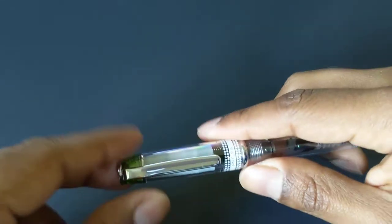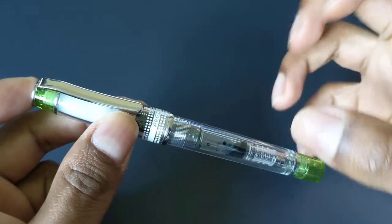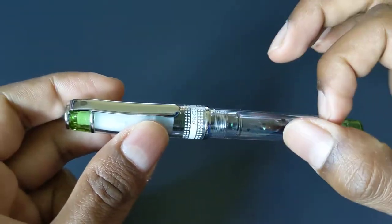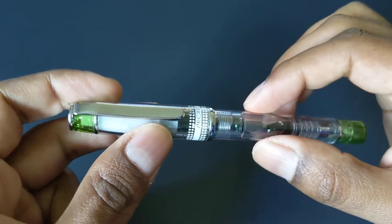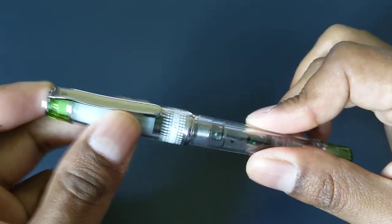Next pen we'll talk about is the Pilot Prera. This one just has a, again, it sort of has, this is a true snap cap, but it has sort of a little bit of pressure buildup like the Pilot E95s does, but it's also a very secure capping mechanism.